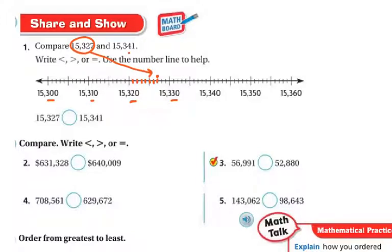So after we write it, the next one is 15,341. So 341. So this is 340. So this is going to be 41. So which number is bigger? Well, this number comes after on the number line. So it's going to be the bigger number, right? So I'm going to put my less than sign because this number is less than this number. And this number is greater than that number.